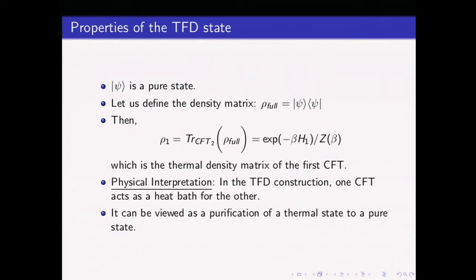This state is completely pure — that's very easy to check: the density matrix, if squared, gives you the density matrix back. One of the very intriguing properties is that if you take the full density matrix and trace over all degrees of freedom of one of the CFTs, what you get is a thermal density matrix corresponding to the second CFT, telling you that the two entities in this state are thermal quantities. One CFT is acting as some sort of heat bath for the other. This is sometimes also referred to as a purification of a thermal state.